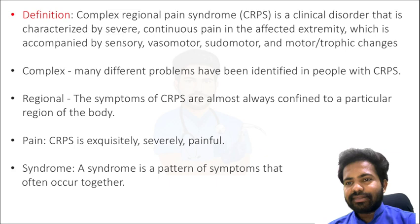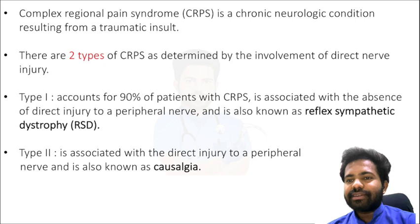Complex Regional Pain Syndrome is a chronic neurological condition resulting from a traumatic insult — usually it is followed by a trauma. There are two types of CRPS, which are determined by the involvement of a direct nerve injury.